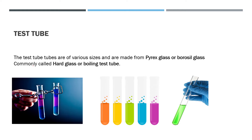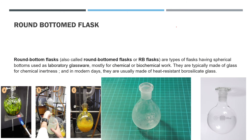Let's go to our first stop: the test tube. You could see what a test tube looks like. It is used for heating chemicals, storing chemicals, and it is mostly used for boiling chemicals at high temperatures. They are made out of pyrex glass or borosil glass.